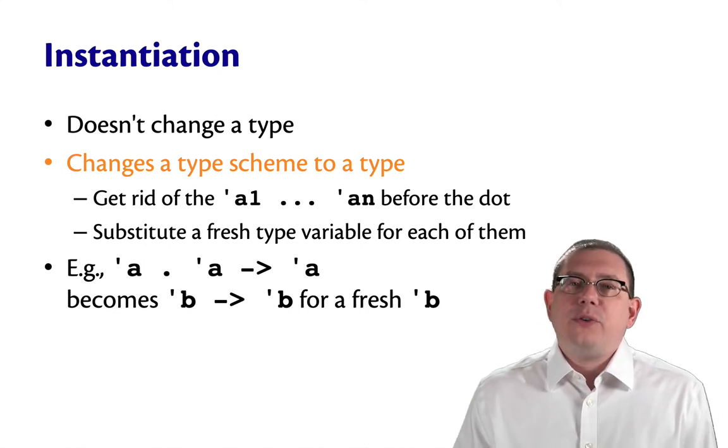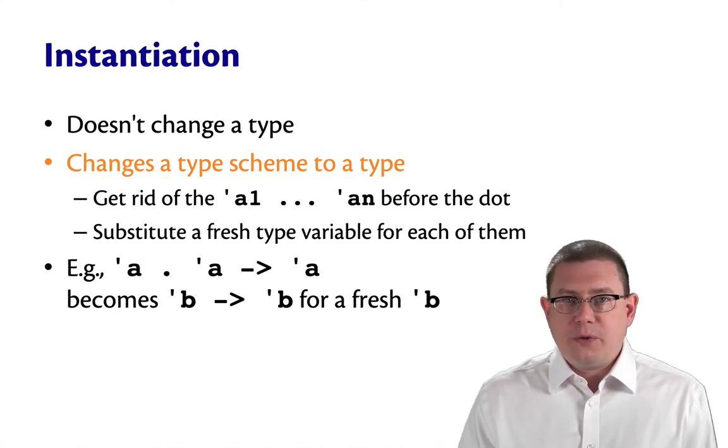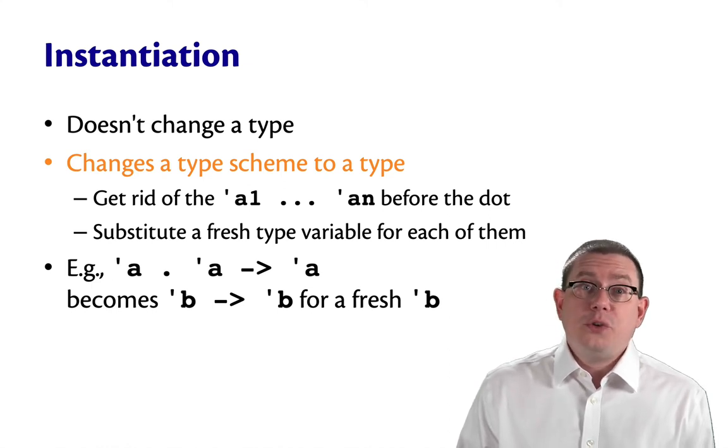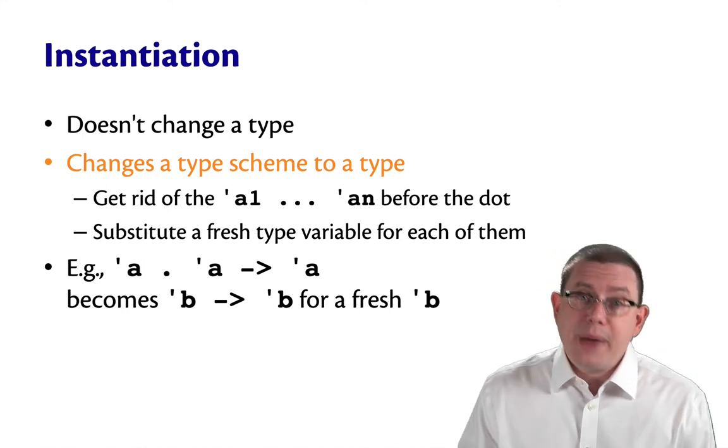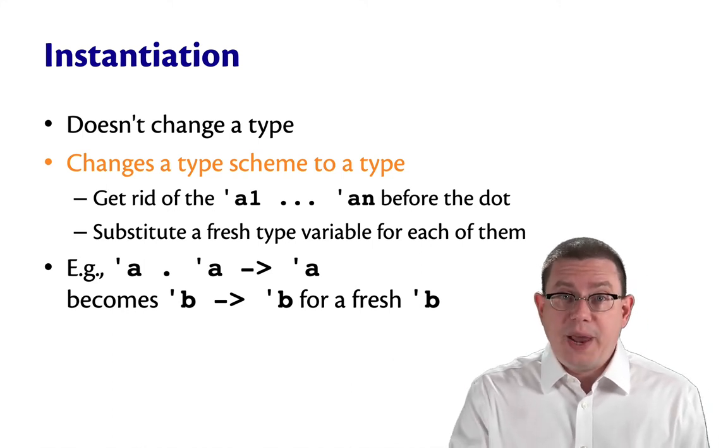And you substitute a fresh type variable for each of them. So if you had something like the identity function, which would be alpha dot alpha arrow alpha, that would become beta arrow beta for a fresh beta.